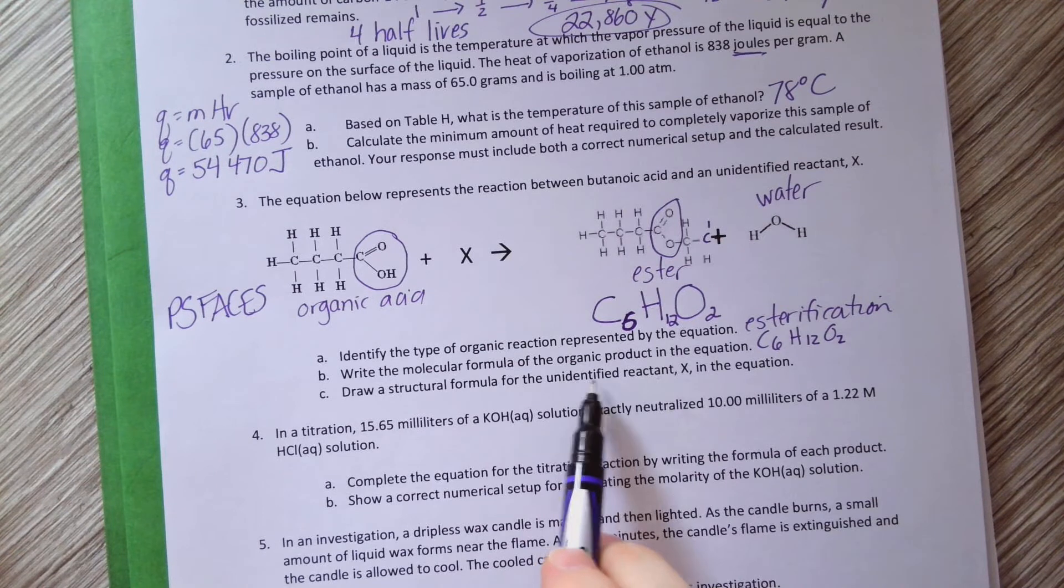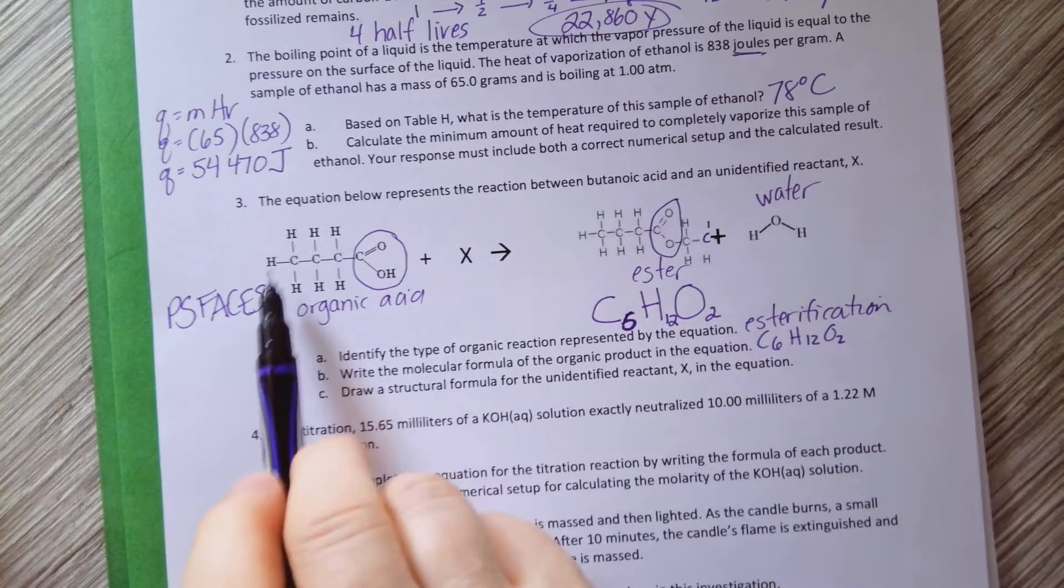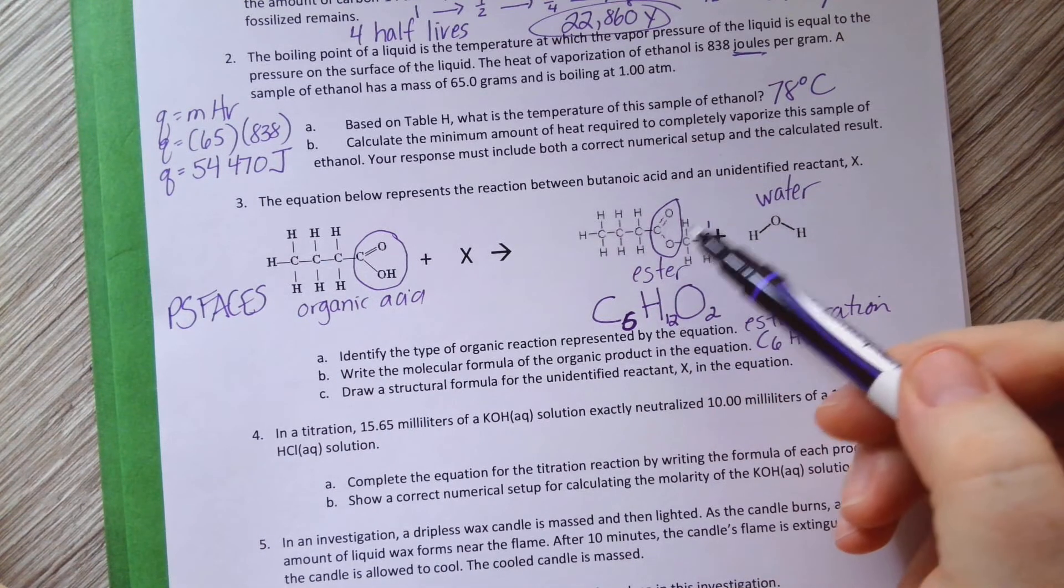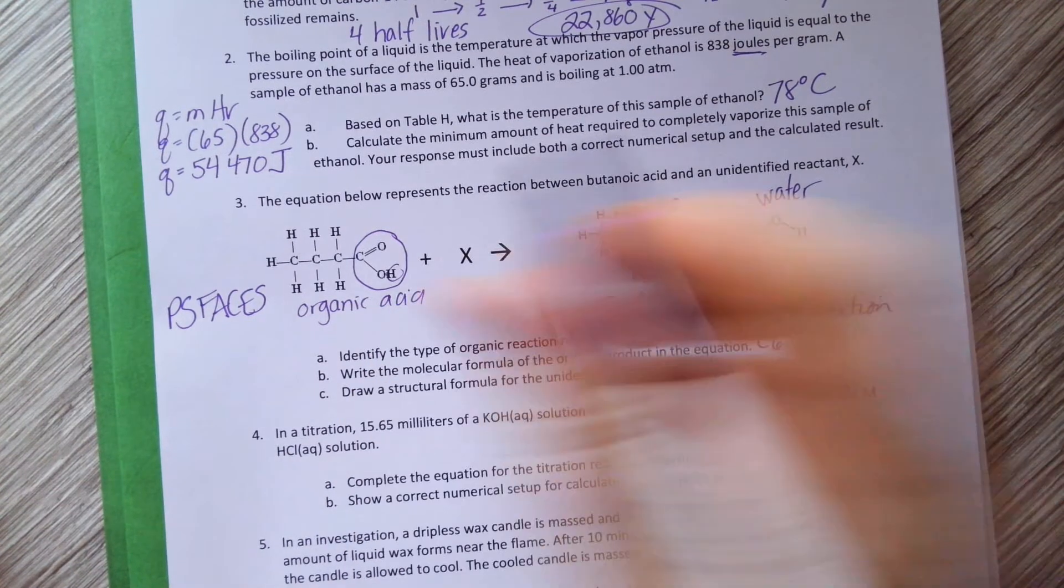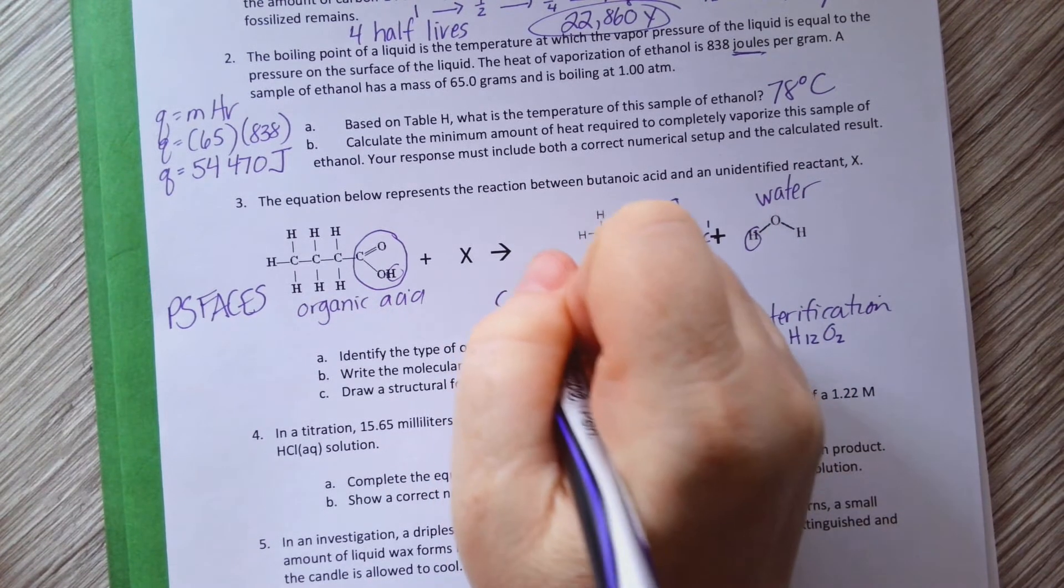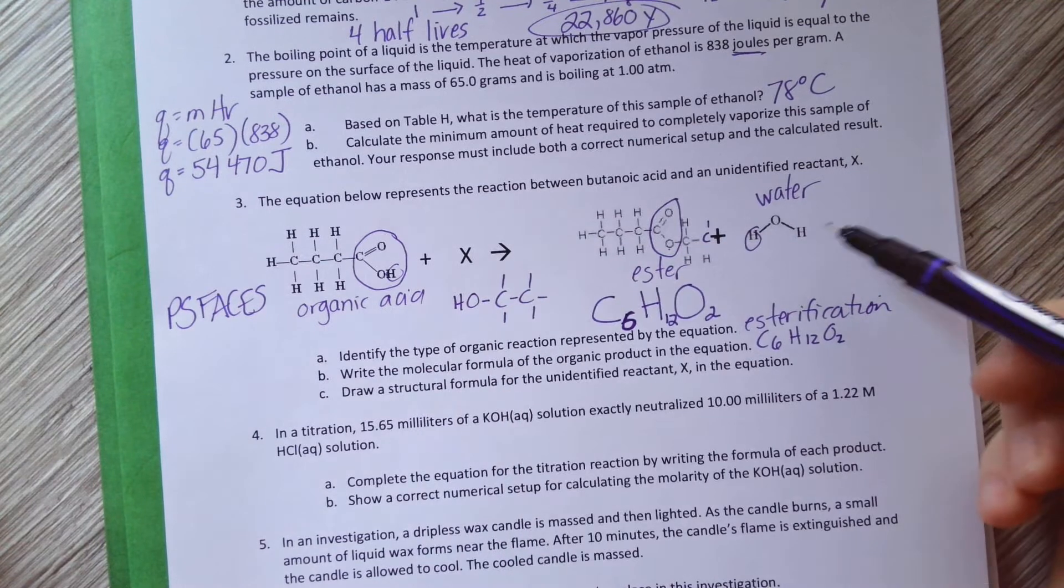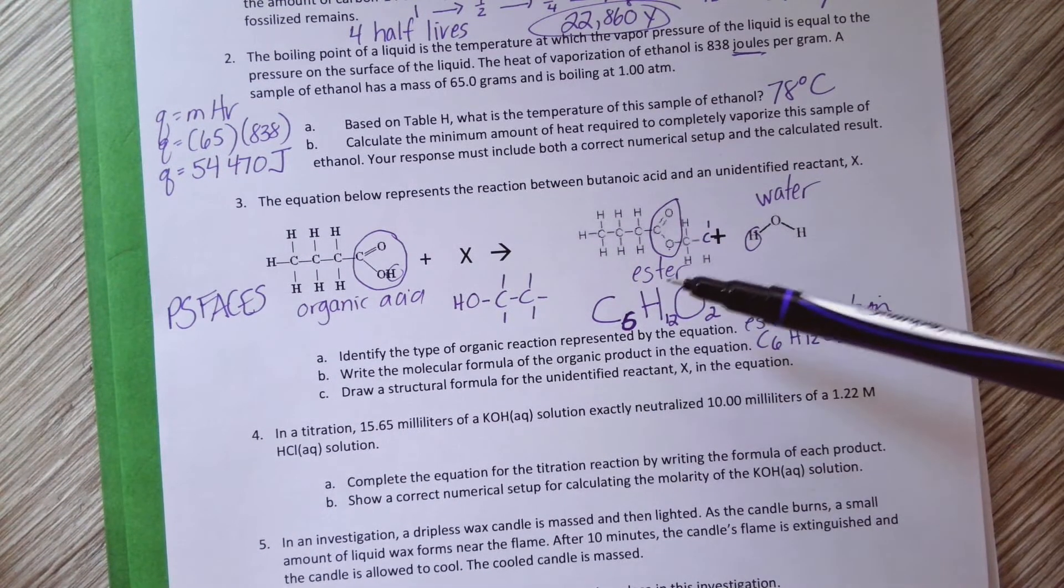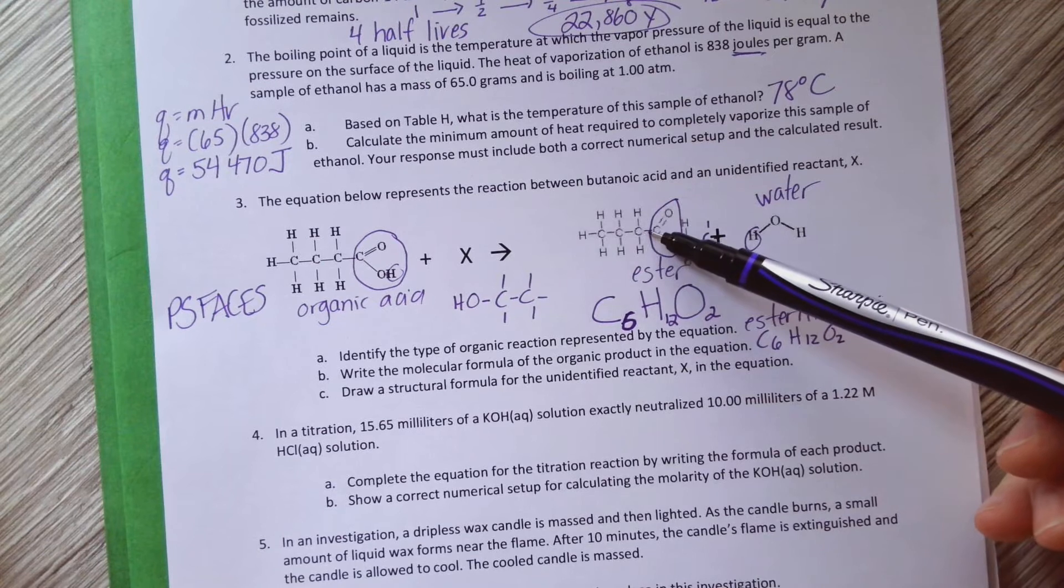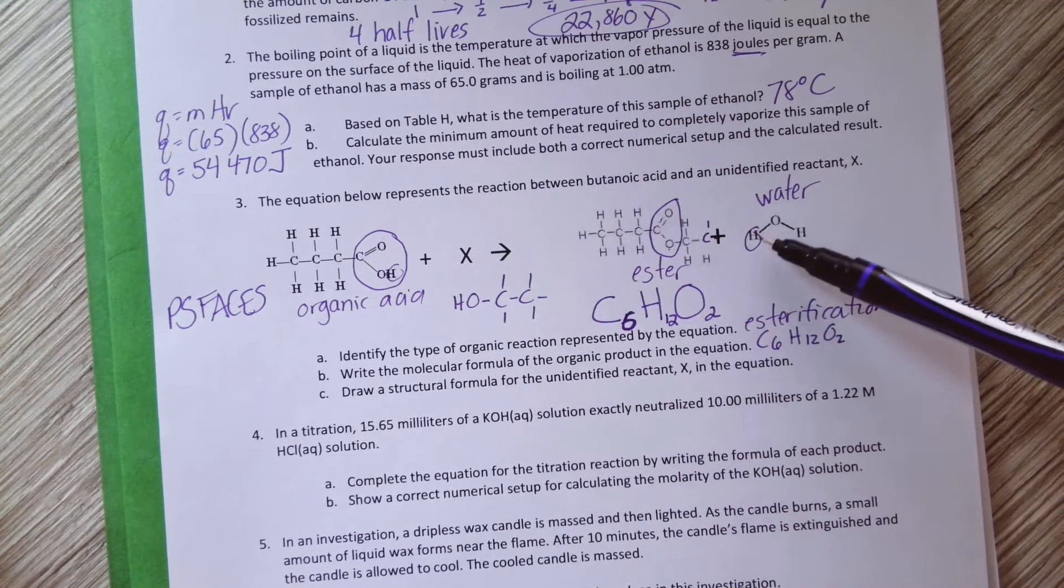Draw the structural formula for the unidentified reactant X in the equation. Alright, so let's look. This has 1, 2, 3, 4 C's with a double bond O and an O. This H was pulled off to start the water. So that means I know for sure I have what's over here, but what is the other part I need to make water? An O-H. So it's an organic acid and an alcohol that makes an ester and water. So I had 4 with a double bond O and the O. That's this whole part, right? And then I need 2 C's on this side and then I need the O-H, which is the other part of water. And there we go.